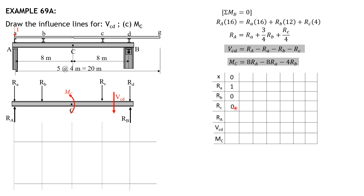So r sub small a is 1, r sub small b and r sub small c are 0. R sub A from the equation is also 1. Shear in panel CD: 1 minus 1 minus 0 minus 0 equals 0. Moment at C: r sub small a is 1, r sub small b is 0, so R_A times 1 minus r_a times 1 gives M sub C equals 0. Then when x is 4, the unit load is at B, so r sub small b is 1 and the rest are zero.